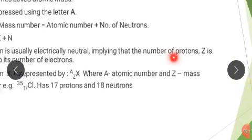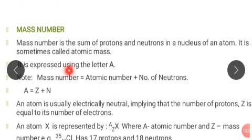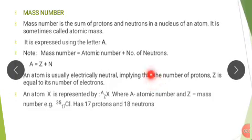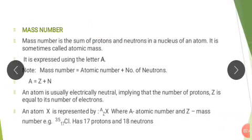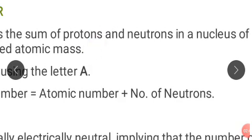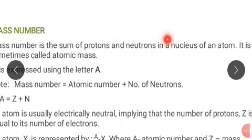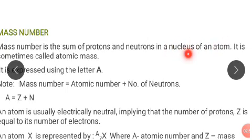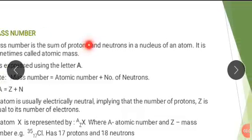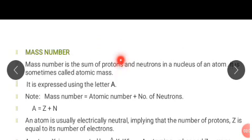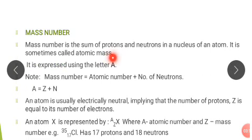What about mass number? We also need to define what mass number is. Mass number is defined as the sum of protons and neutrons in the nucleus of an atom. It is also sometimes referred to as the atomic mass, and it is denoted by the letter A.